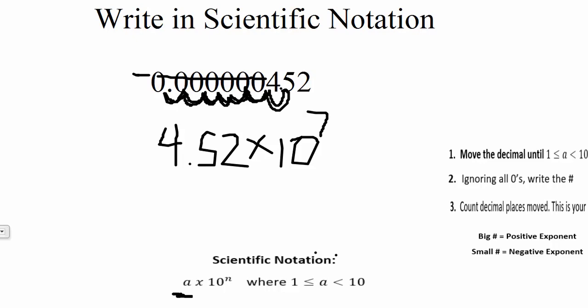The only other thing we need to figure out is, is it positive or is it negative? So again, if it's a big number, it's positive, but here we had a little number. This is an extremely small number, so that means a negative exponent. So our number in scientific notation is 4.52 times 10 to the negative 7th.